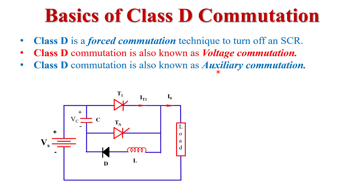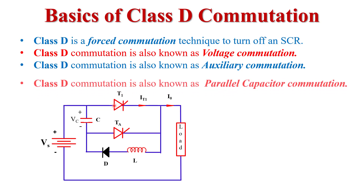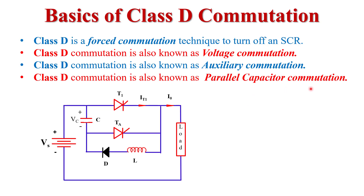It is also known as auxiliary commutation, because in the Class D commutation circuit we use an auxiliary thyristor. With the help of this thyristor, we turn off the main thyristor — that is why it is called auxiliary commutation. It is also referred to as parallel capacitor commutation, because in the circuit diagram of Class D commutation we use a capacitor, and the voltage across that capacitor turns off the main SCR.